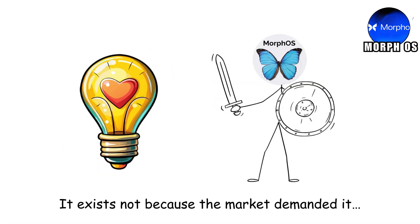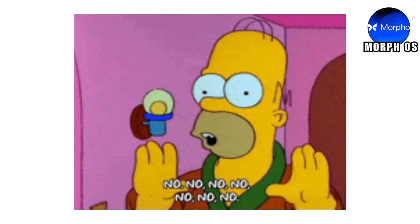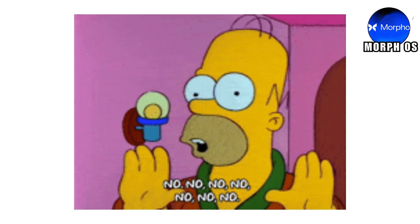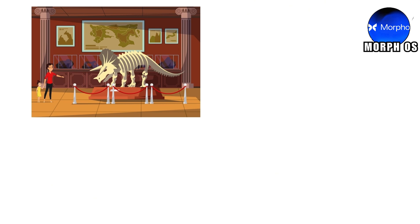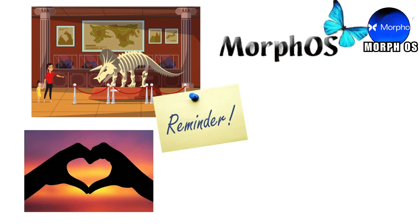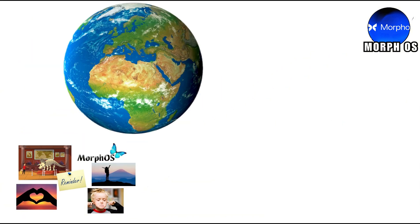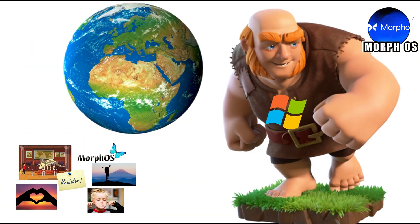It exists not because the market demanded it, but because a handful of people refused to let a beautiful idea die quietly. MorphOS is a living museum, a reminder that some operating systems survive purely on love, dedication, and stubbornness, proving that even in a world dominated by giants, small communities can keep a dream alive, polished, and surprisingly functional decades later.